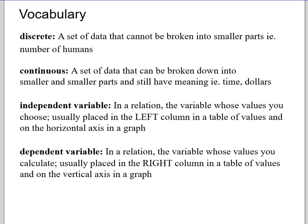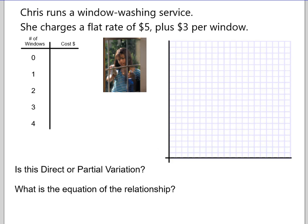Okay, so vocabulary again. These are from the other slide the other day. So pause it here if you haven't seen these and take a quick read to refresh. Okay, so let's do two quick questions here. Chris runs a window washing service. She charges a flat rate of $5 plus $3 per window. So if you call Chris to clean your windows and she shows up, you owe her $5 whether she washes a window or not. If she washes one window, it's going to be the $5 plus $3 for the first window and then $3 for each additional window that she washes. So if she washes four windows, that's going to be 4 times 3 is 12 plus 5 more is $17.